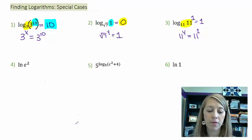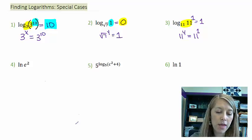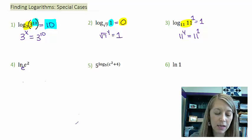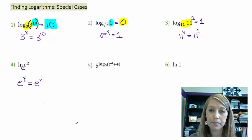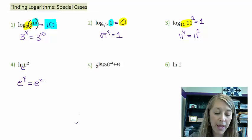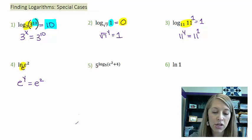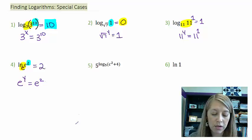Okay, let's see what's happening with number four then. We know that natural logs have base e. So e to what power is equal to e squared? Well, this is the same property as one and three. If our bases match, then the answer is going to be our exponent. So our answer here is two.